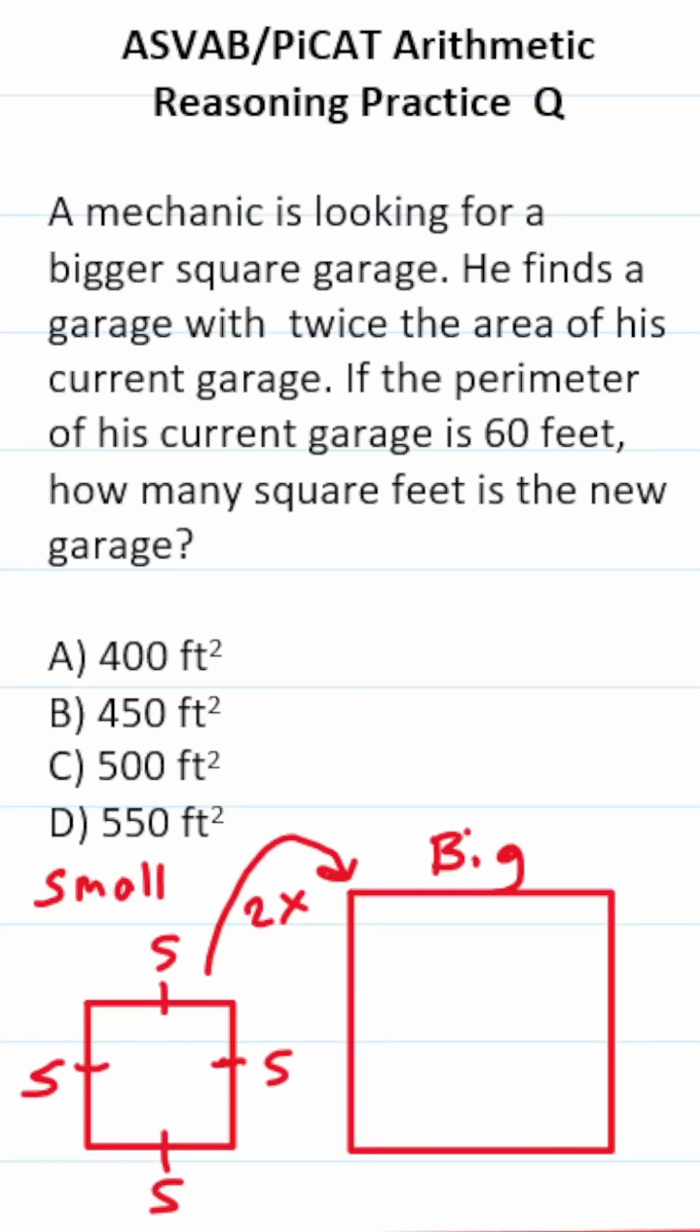ASVAB/PICAT arithmetic reasoning practice test question: A mechanic is looking for a bigger square garage. He finds a garage with twice the area of his current garage. The perimeter of his current garage is 60 feet. How many square feet is the new garage?